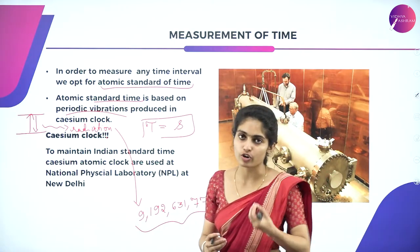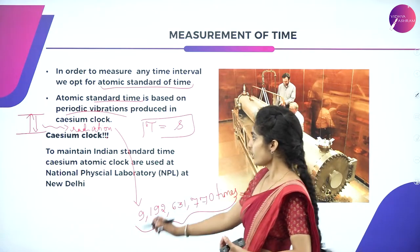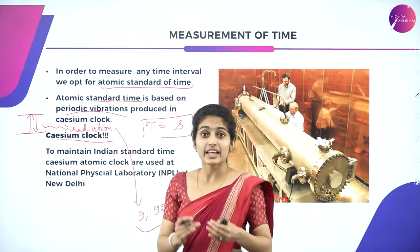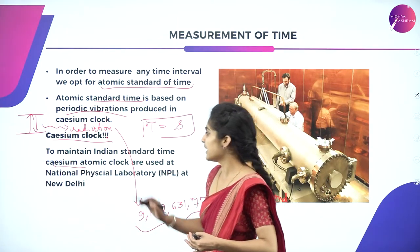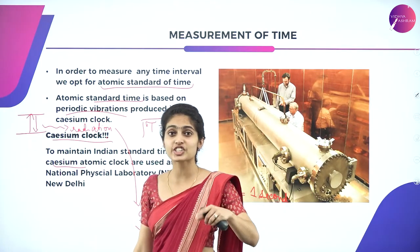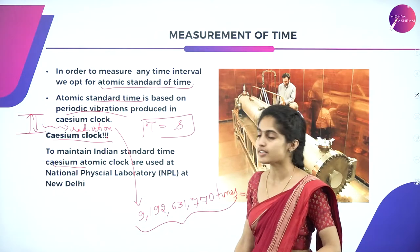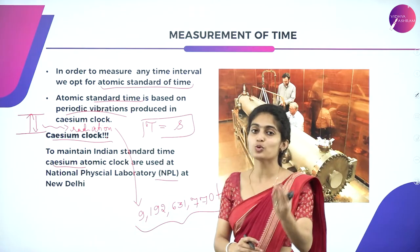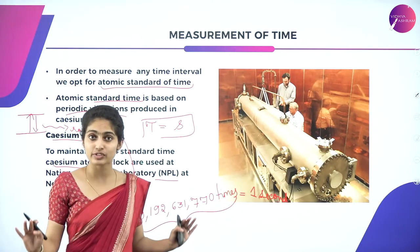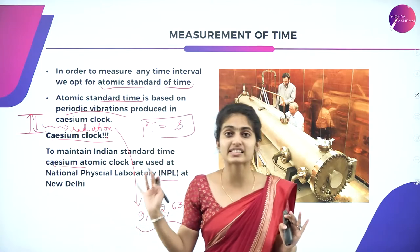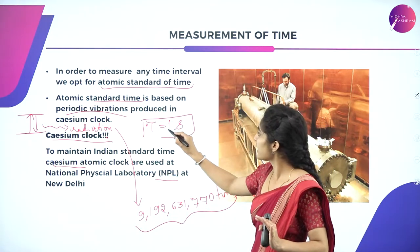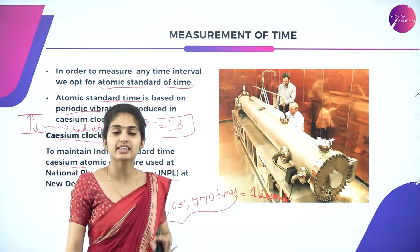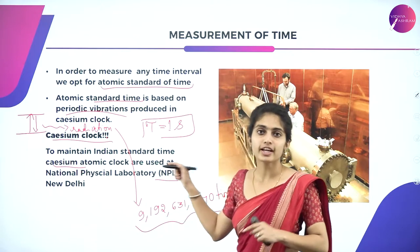When the transition of particles takes place between two hyperfine lines of the ground state of the cesium-133 atom, there is emission of certain radiation responsible for a specific number of vibrations, which equals one second. That is the definition of one second — the periodic vibration of the cesium atomic clock. In India, the Indian Standard Time is maintained using the cesium atomic clock located at the National Physical Laboratory (NPL) at New Delhi.